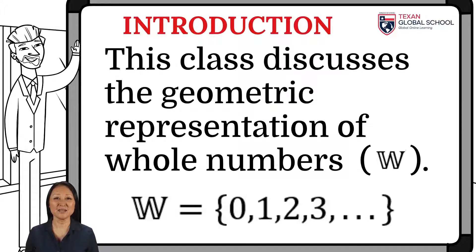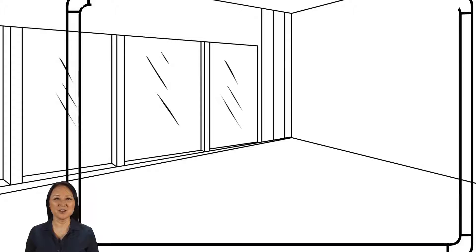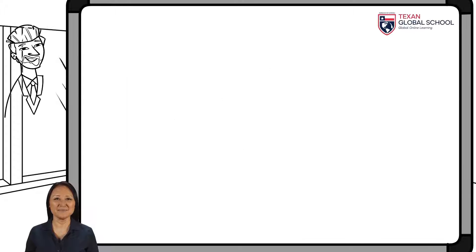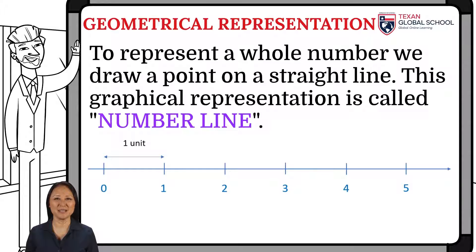Recall that in previous classes, the set of whole numbers is represented as W. To represent a whole number, we draw a straight line. This line is known as the number line.